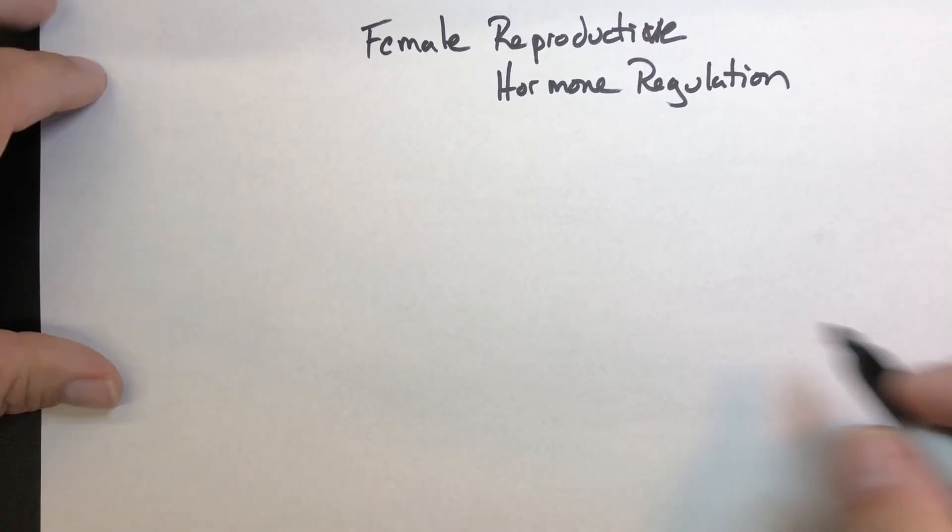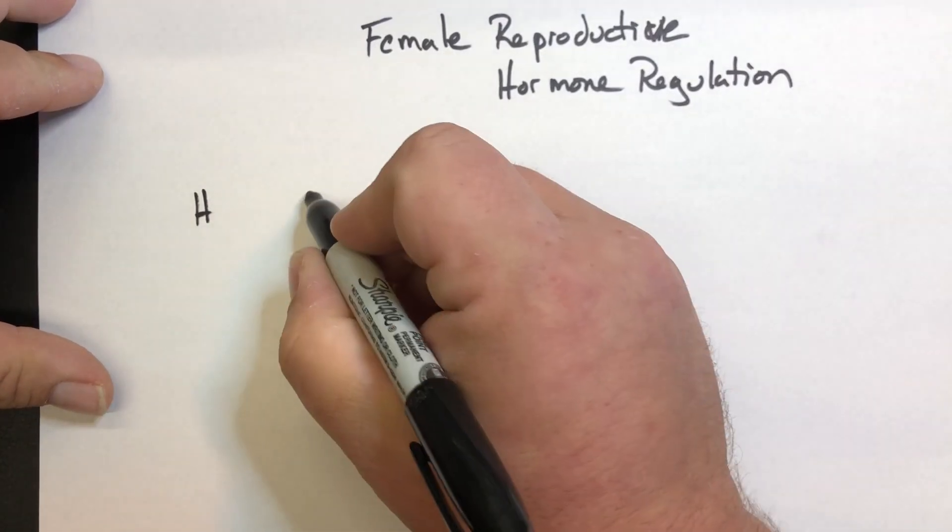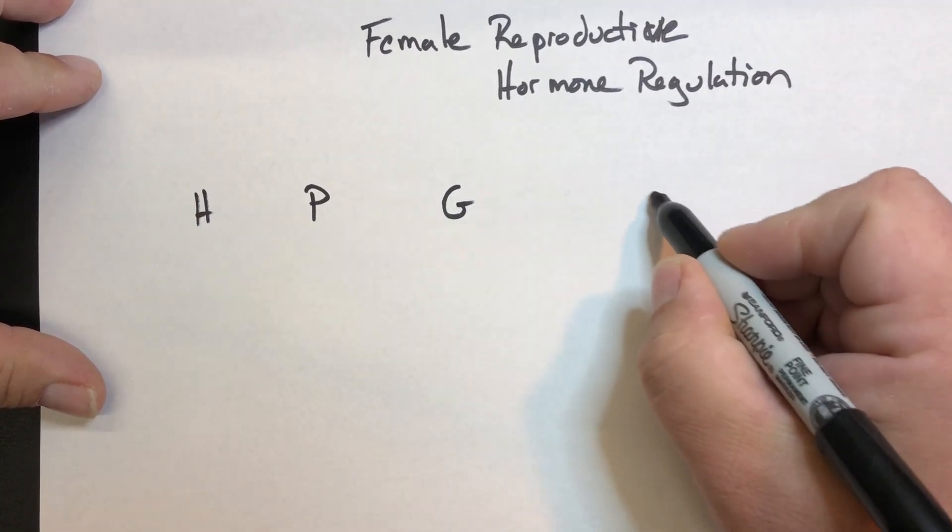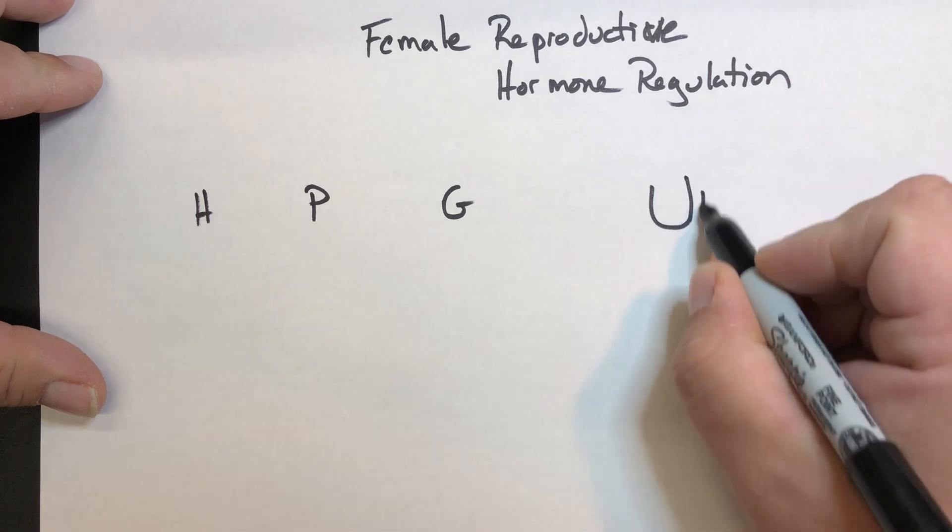Female reproductive hormone regulation. So still HPG axis, but we also have to focus on what happens at the uterus.